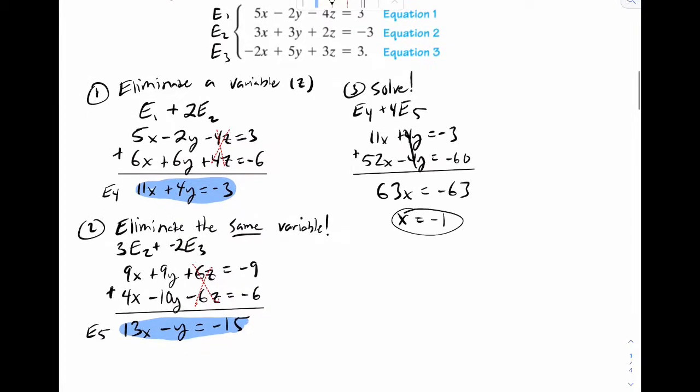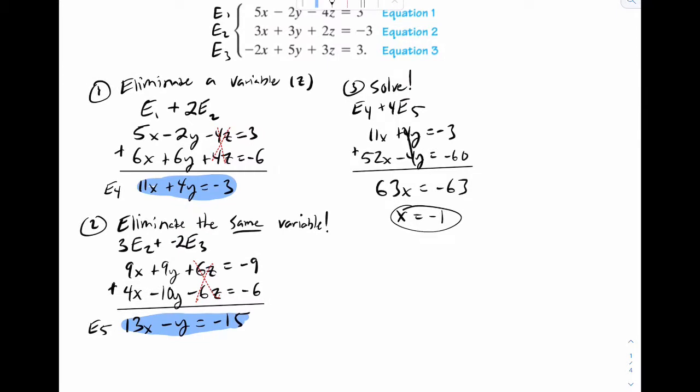And now we're going to back substitute. So if x is negative 1, let's pick, I'll pick this one. 11x plus 4y equals negative 3. Plug in negative 1 there. Negative 11 plus 4y is negative 3. So 4y must be 8. So y must be 2.